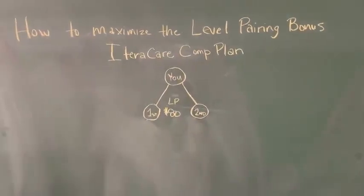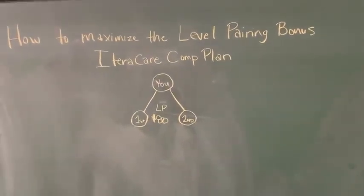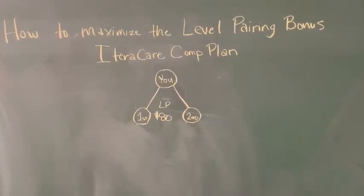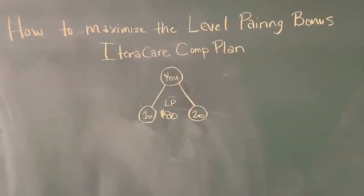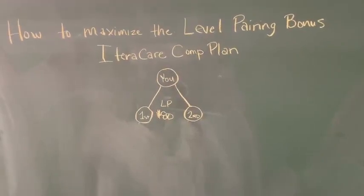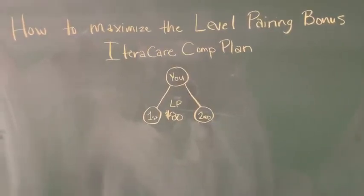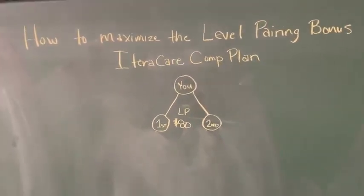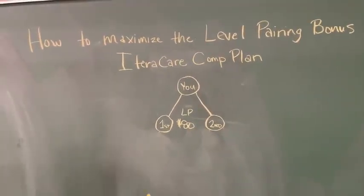So remember, all commissions in the compensation plan in the dual team will give you $80 on the level pairing, but 20% goes to your product redemption wallet for your free product. So the actual money in your commission account is $64 instead of $80 on this scenario here.